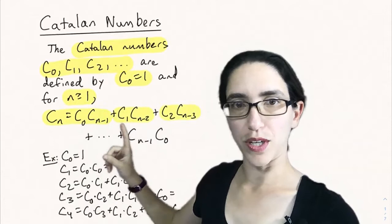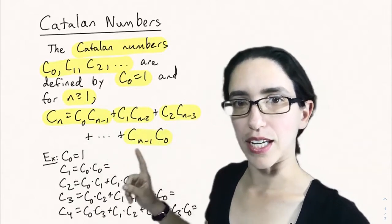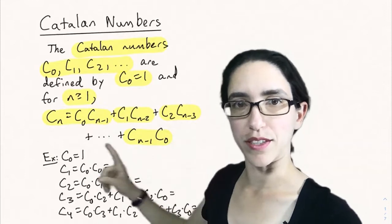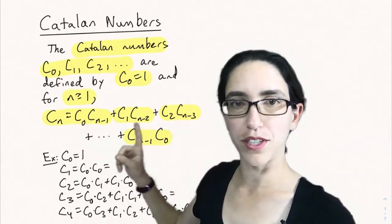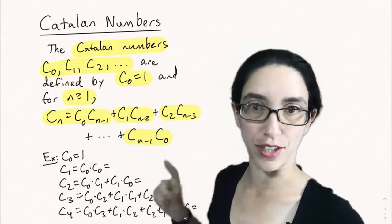It's C0 times Cn minus 1 plus C1 times Cn minus 2 plus C2 times Cn minus 3 down to Cn minus 1 times C0. Notice the subscripts on the first factors increase by 1 each time and the subscripts on the second factors decrease each time.